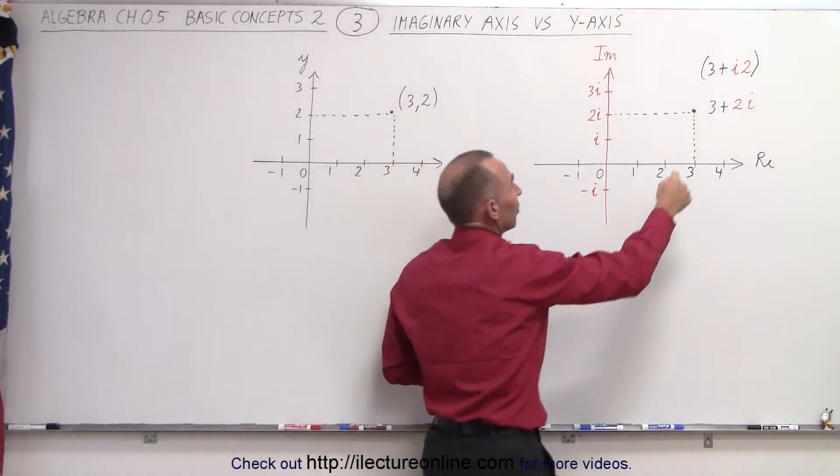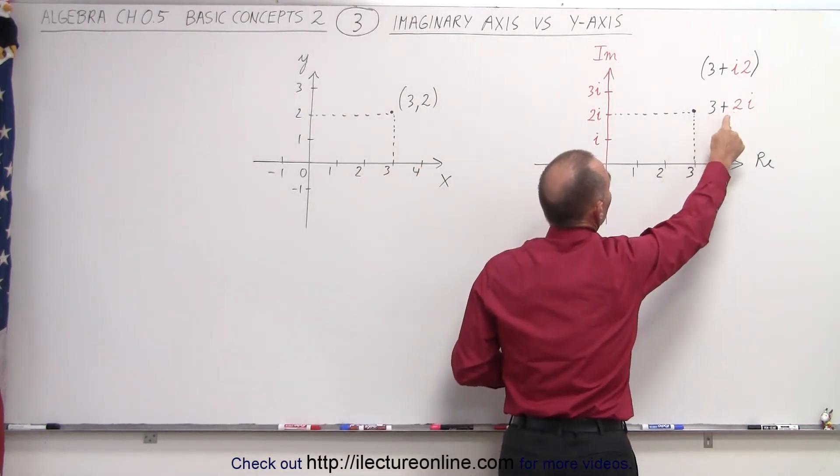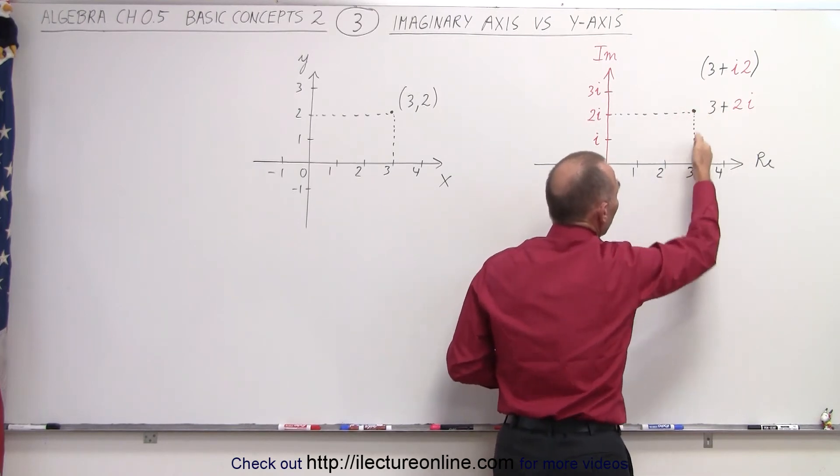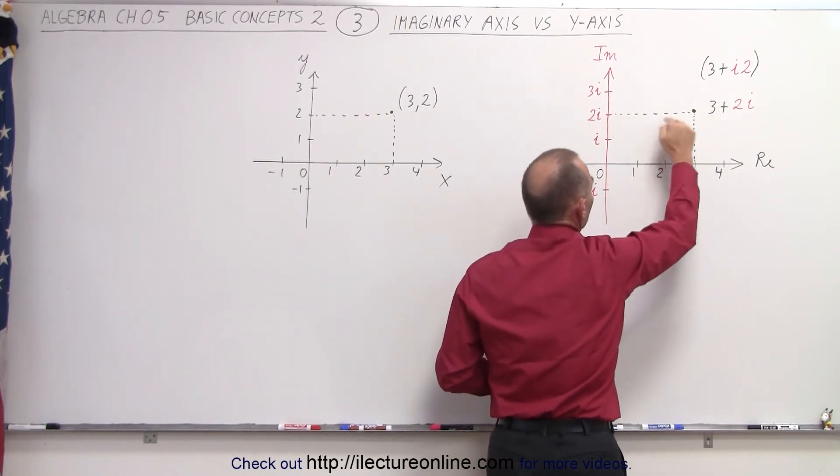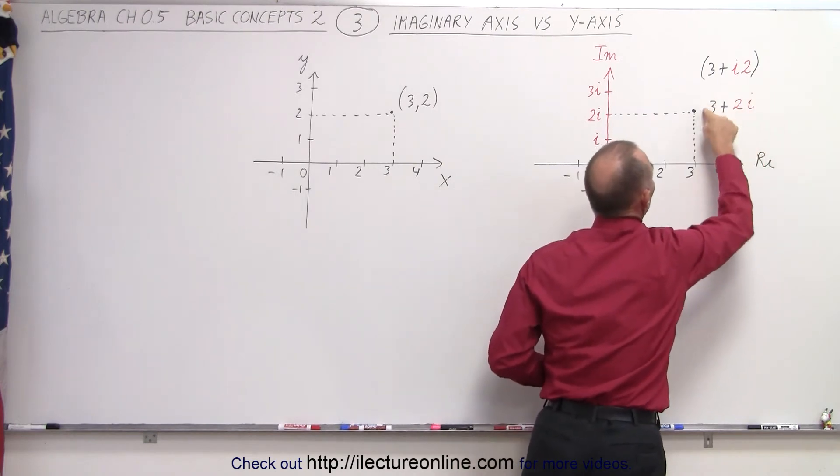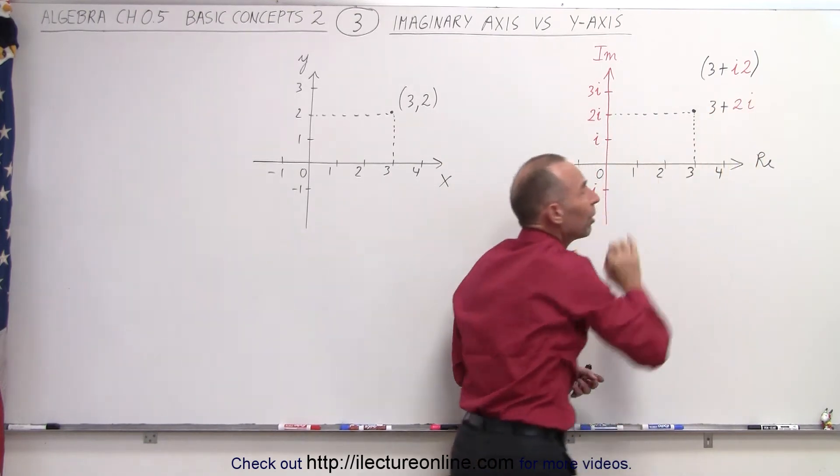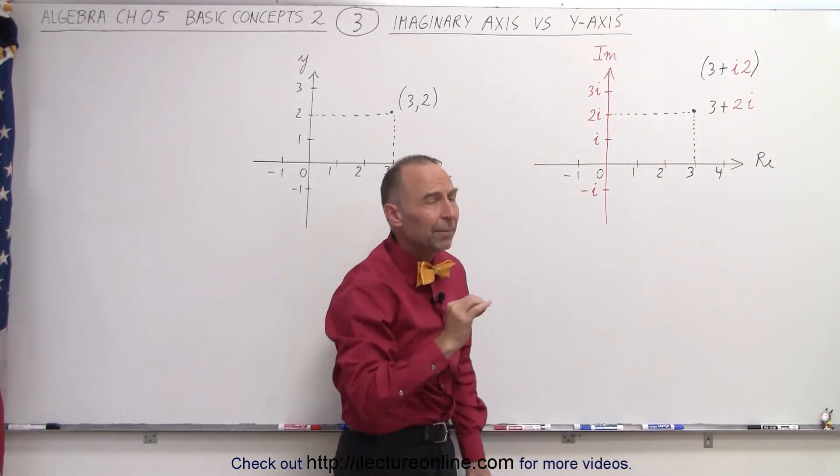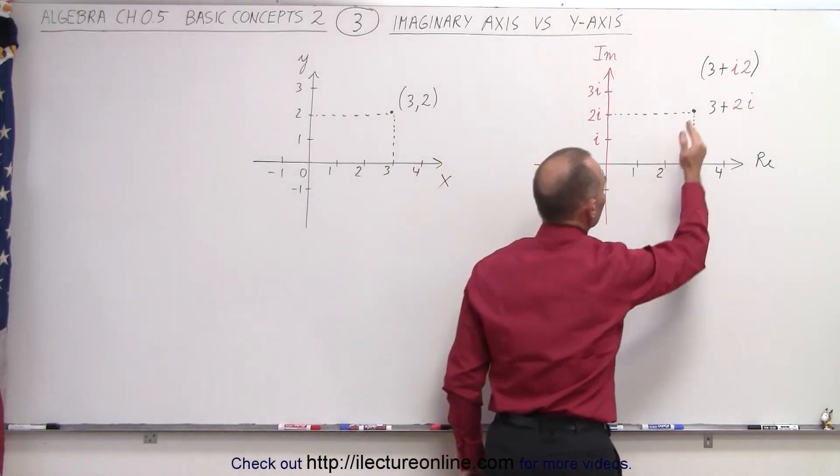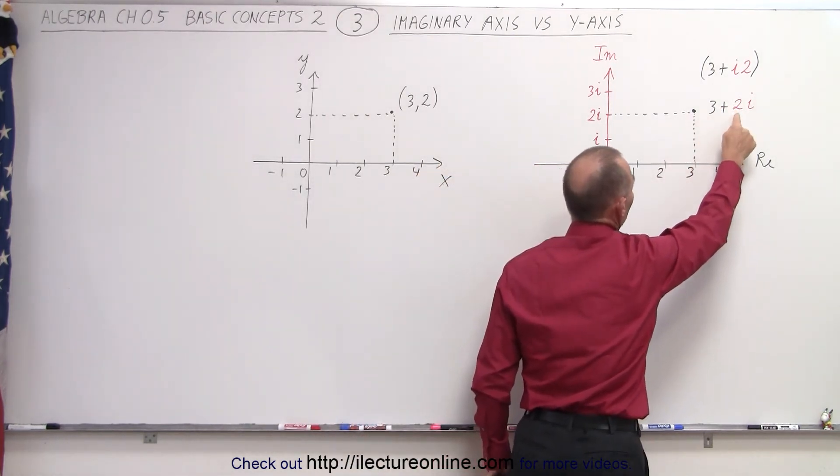Now, let's pick a point: the point 3 plus 2i. That has a real part to it, and it has an imaginary part to it. This is the representation of a single number with a real part and an imaginary part. The real part is 3, the imaginary part is 2i.